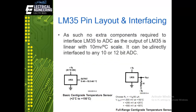The LM35 comes in a TO-92 package with three pins: the first is the positive supply, the second (center) pin is the output, and the third pin is ground. With a single supply, it gives a temperature measurement range of 2°C to 150°C. With a dual supply, you can use the full range from minus 55°C to 150°C.